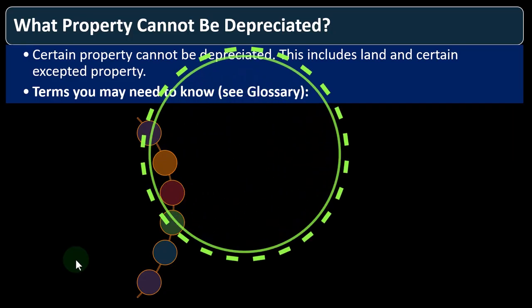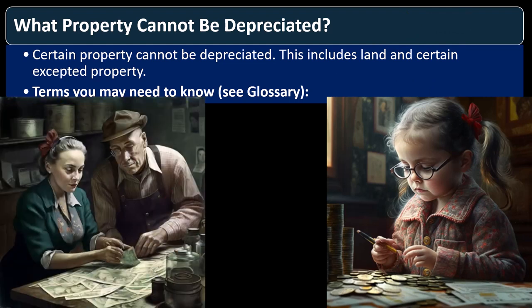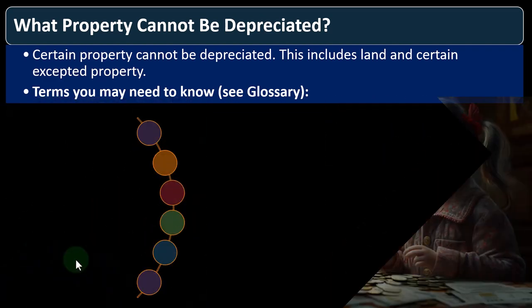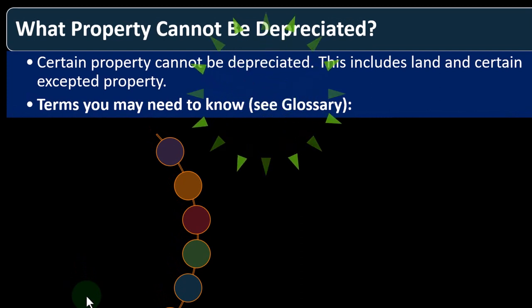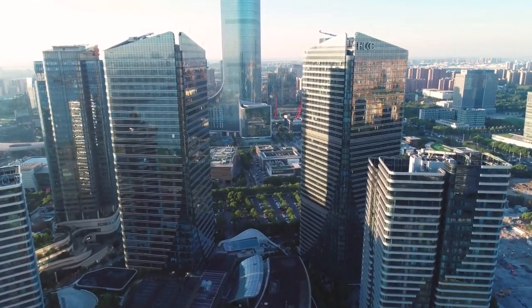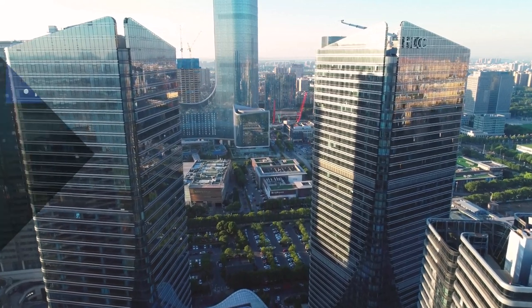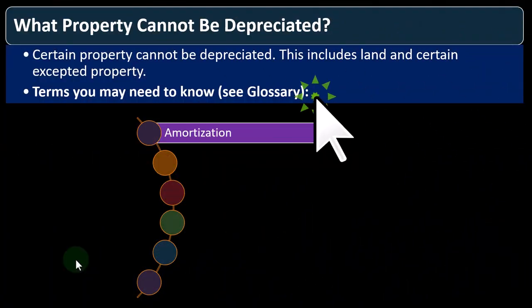What property cannot be depreciated? Certain property cannot be depreciated — this includes land and certain exempted property. Normally, when we think about things that are going to be depreciated, we're putting them on the books as an asset because they're going to be long-lived items, and we want to allocate the cost to the period that it's being consumed. However, land is different from equipment or furniture, for example.